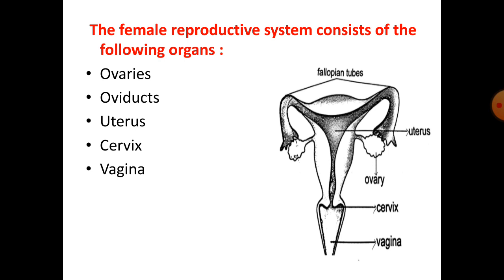The main function of the cilia is to carry the ovum from the ovary and transport it to the uterus.